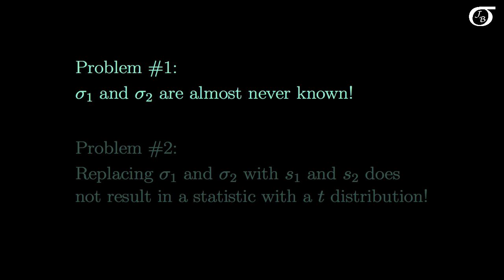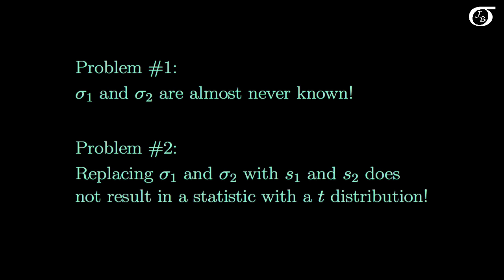But here we run into problem number 2, in that replacing the population standard deviations sigma1 and sigma2 with the sample standard deviations s1 and s2 does not result in something that has a t-distribution, at least not exactly.